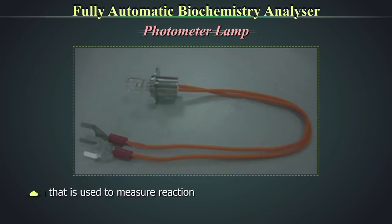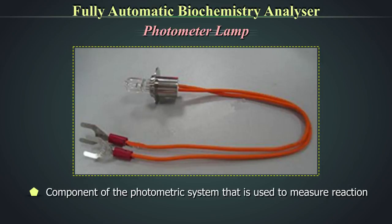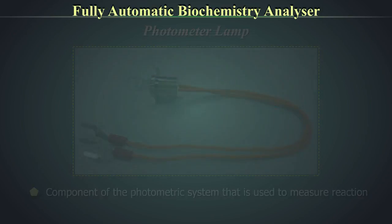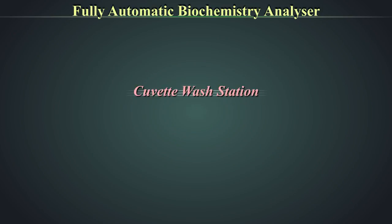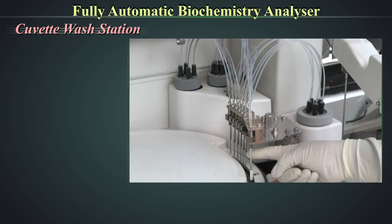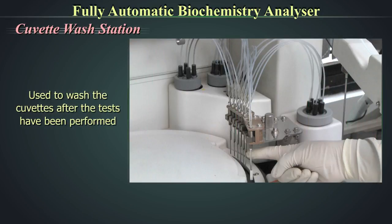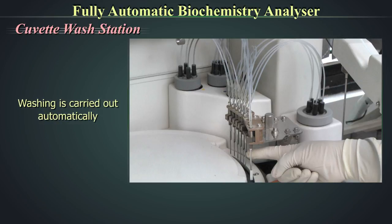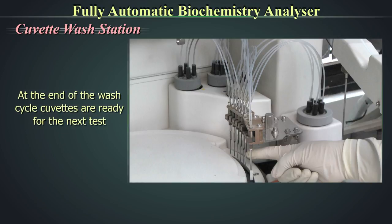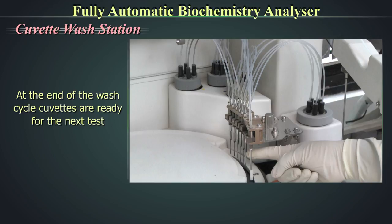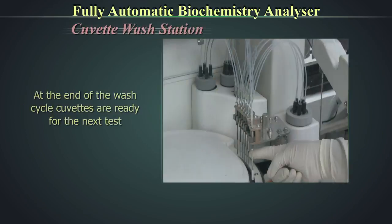The photometer lamp is a component of the photometric system used to measure reactions. The cuvette wash station is used to wash cuvettes after tests have been performed; the washing is carried out automatically. It cleans, rinses, and dries cuvettes after analysis, and at the end of the wash cycle, cuvettes are ready for the next test.